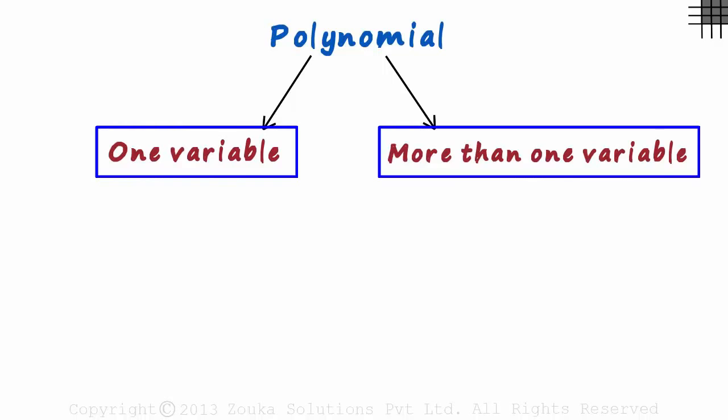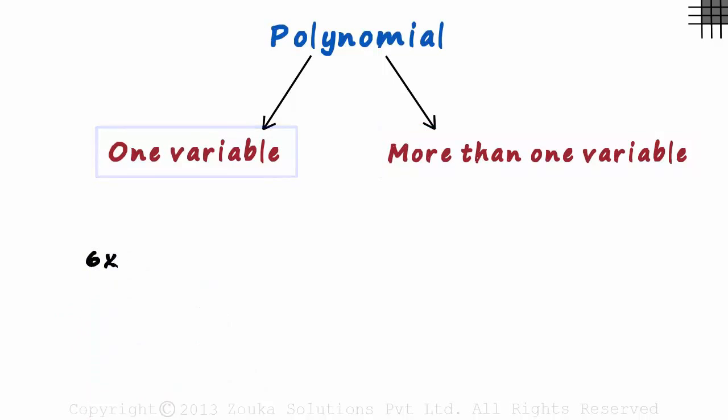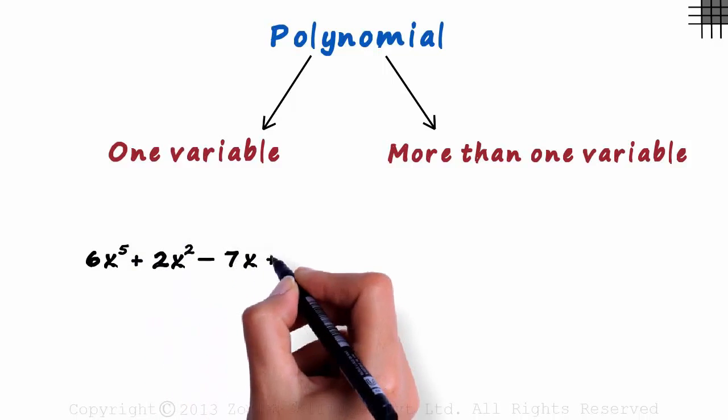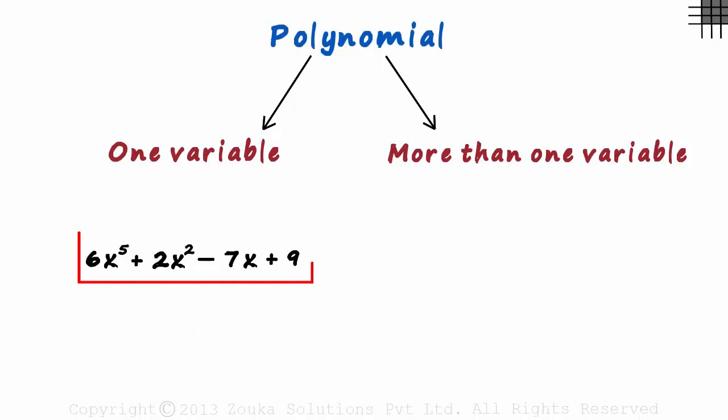These are the only two possibilities. An example of the first type would be 6x raised to 5 plus 2x squared minus 7x plus 9. This polynomial has just one variable which is x.